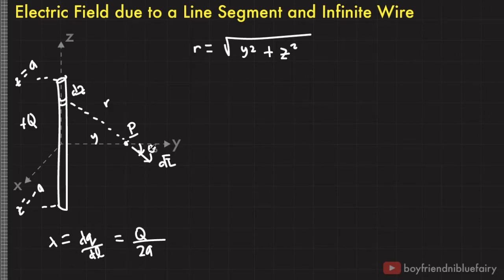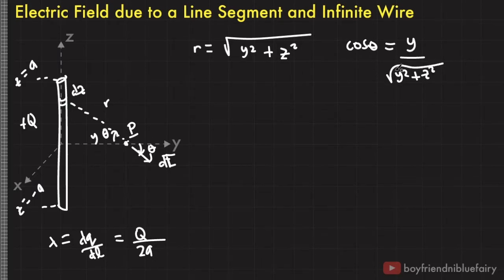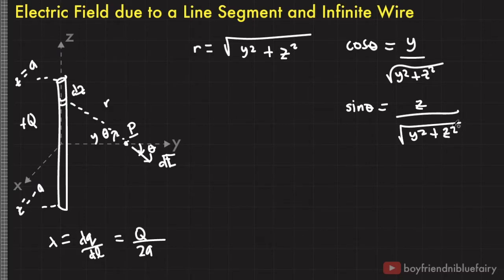Now, if this is theta — the angle of dE with respect to the y-axis — then obviously this angle in the triangle is also theta. From the figure, we can write expressions for cosine theta and sine theta. Cosine theta is equal to the adjacent side y divided by the hypotenuse r, which is the square root of y squared plus z squared. Similarly, sine theta is equal to z over the square root of y squared plus z squared.